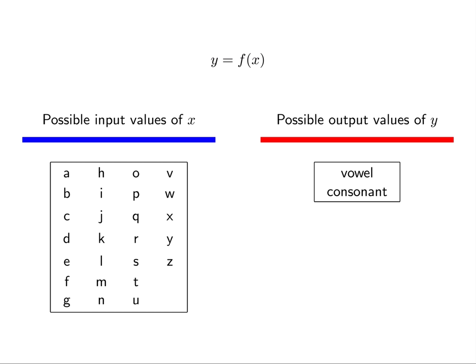The set of possible input values is called the domain. Here, the domain is the set of lowercase English letters.